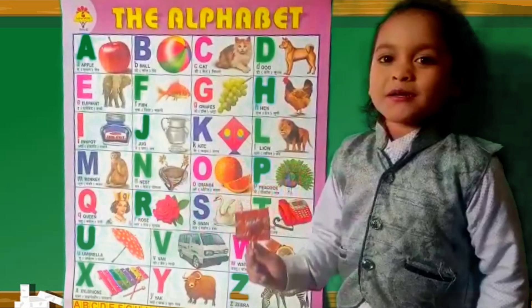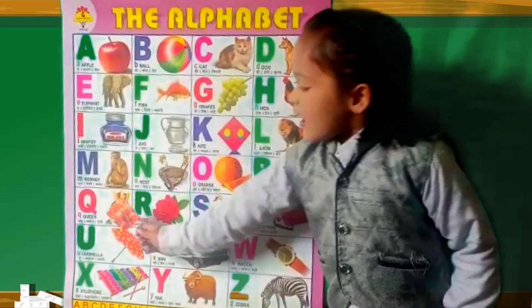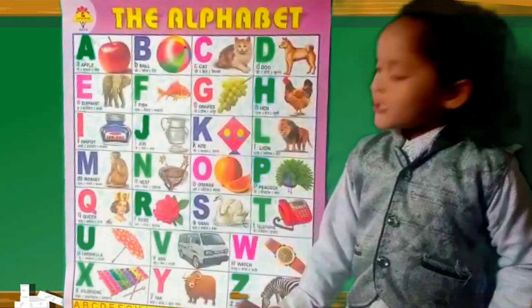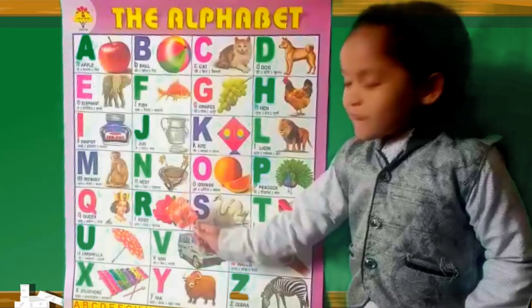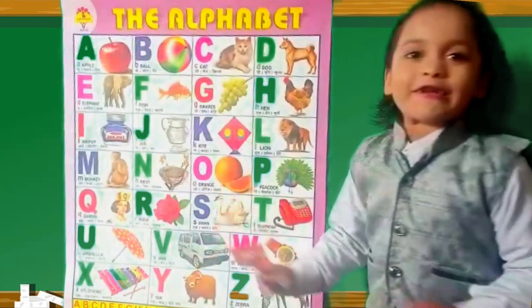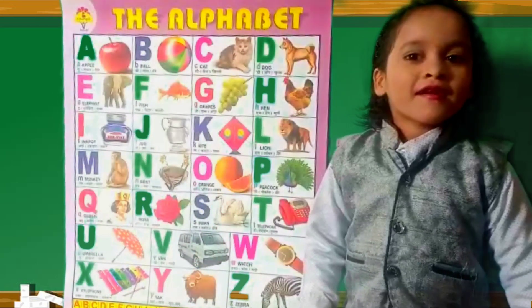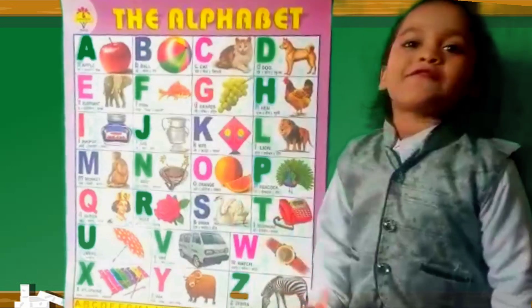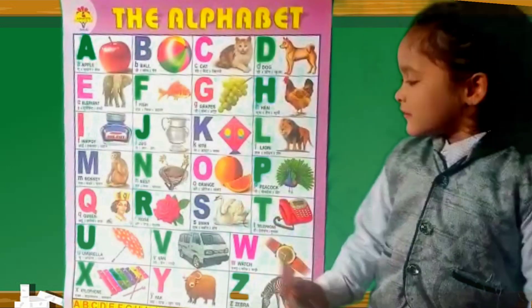P for peacock, 2 for king, R for rock, S for swat, E for telephone.